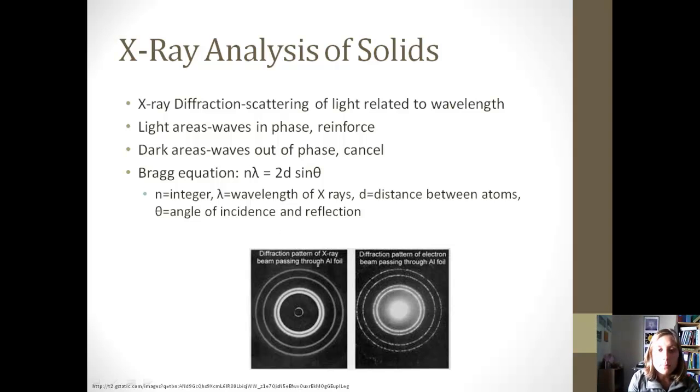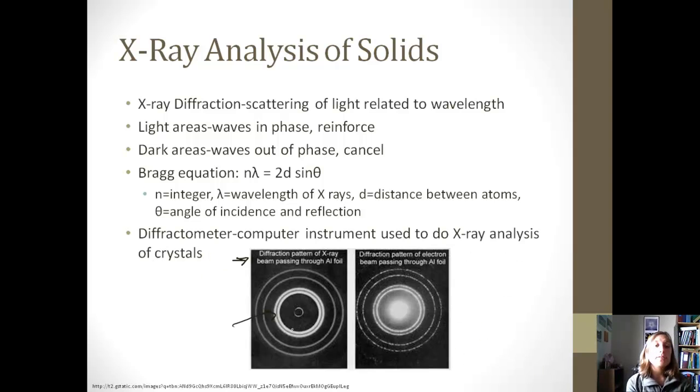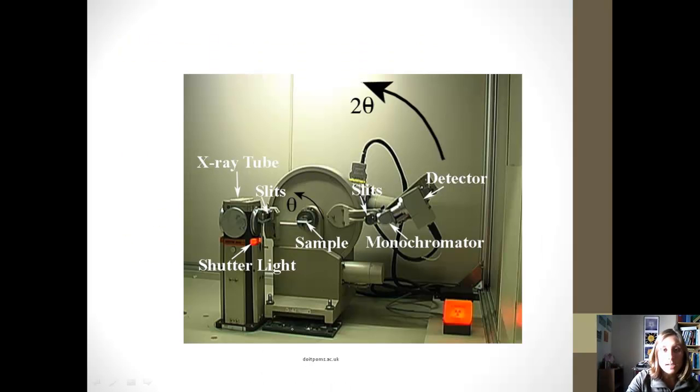We can use what's called the Bragg equation to solve for the wavelength, the distance between the atoms, or the angle of incidence and reflection. So if we take a look at a couple of these examples, the diffraction pattern, x-ray beam passing through aluminum foil, here we have where the waves are in phase. It's very light, and then these dark areas are where the waves are out of phase. We can use a diffractometer to do this x-ray analysis. Basically, we put our sample, and then we can adjust our angle, and in the end we get this picture.